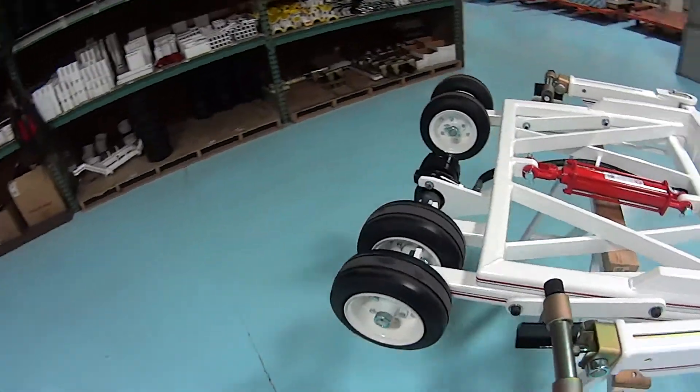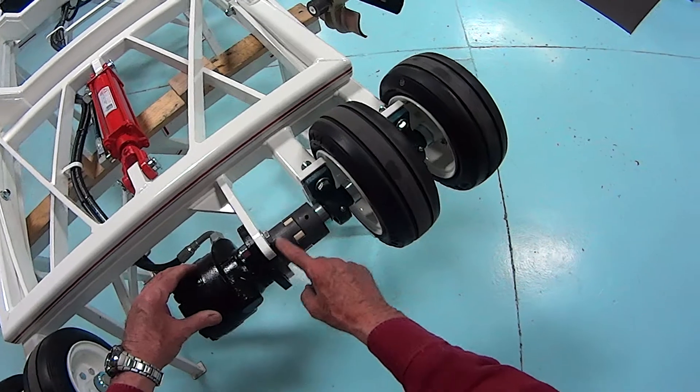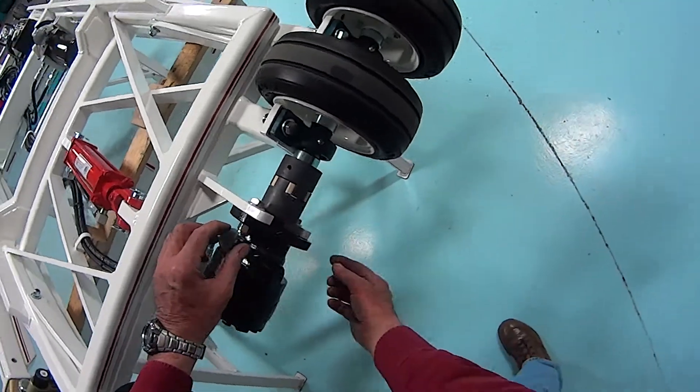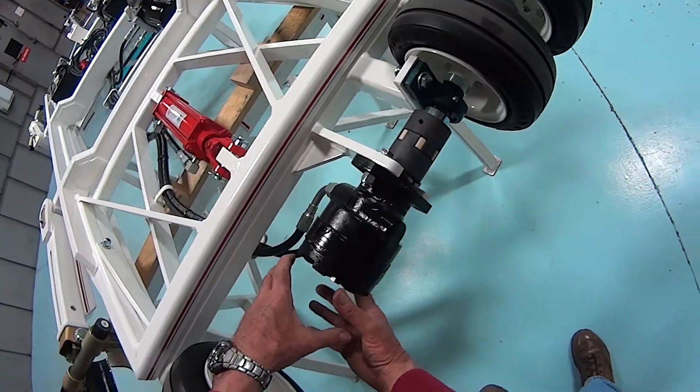To replace it, very simple. To replace any of these parts, you would simply undo these two bolts, take them out, and pull the motor back.